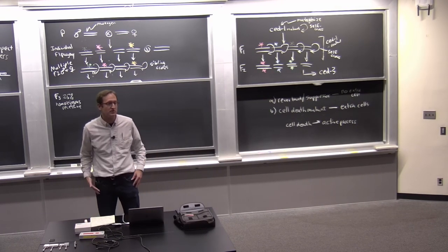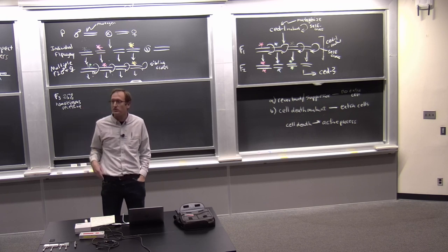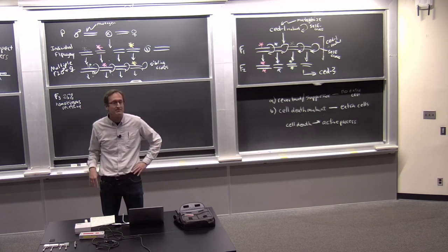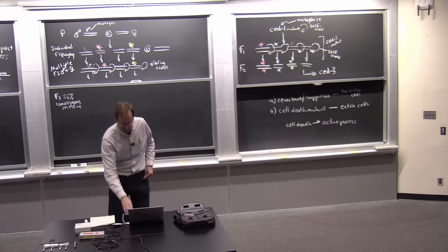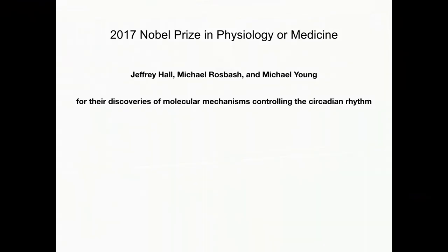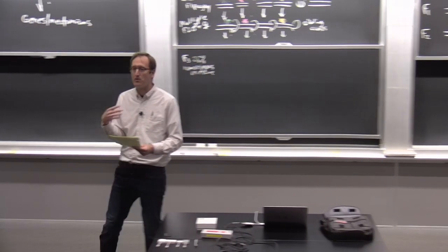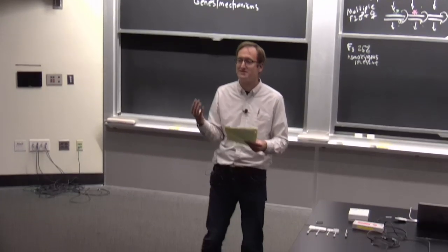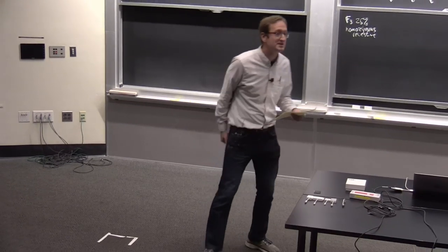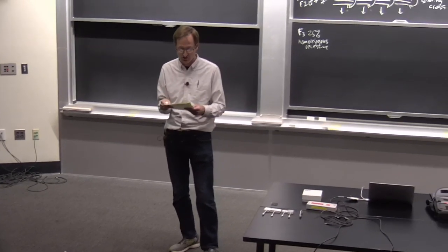This shows that cell death is an active process — not some random event. It's an active process controlled by genes. Now I want to tell you about one more story, and this relates to behavior. How can we go from something as abstract as behavior to specific genes and mechanisms that control this?